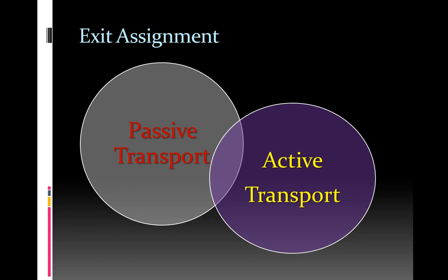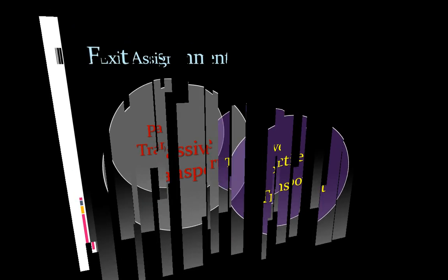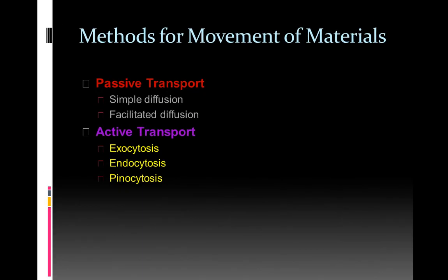And the idea here is that you would include five things that are different between these. And so those would be written in the areas here to the left in the non-overlapping space and then here on the right. And then you'd have at least three things that are similar that you would write in the overlapping space. So keep in mind what you might want to include in your exit assignment that you'll be asked to turn in.